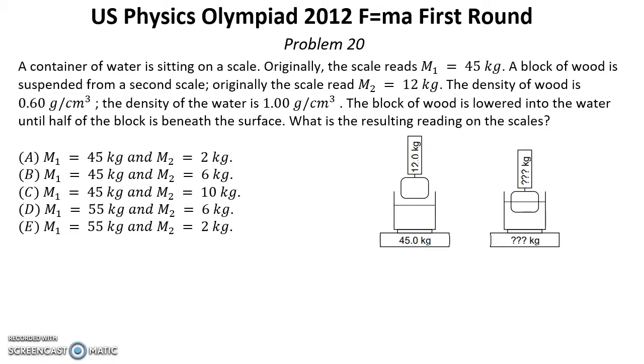The density of wood is 0.6 g per cm³. The density of the water is 1 g per cm³. The block of wood is lowered into the water until half of the block is beneath the surface. What is the resulting reading of the scales?